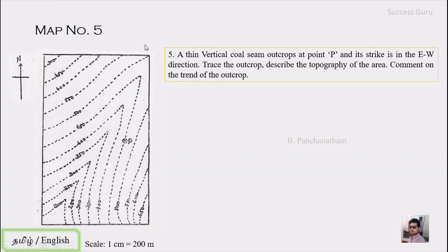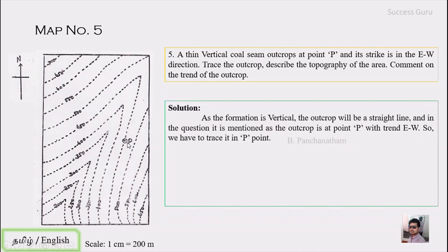You can see this map which has a direction along the left-hand side and a scale mentioned here. Point P indicates where the outcrop appears. Since the formation is vertical, the outcrop will be a straight line — just like map number four. The question states the outcrop appears at point P with an east-west strike, so the straight line should trend east-west and cross point P.